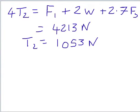Okay, so let's rearrange that equation. We get that 4 times the tension 2 is equal to these terms, and if we plug the numbers in, which I did on my calculator, you end up with 4213 newtons, so divide by 4, we get the tension in cable 2 of 1053 newtons.